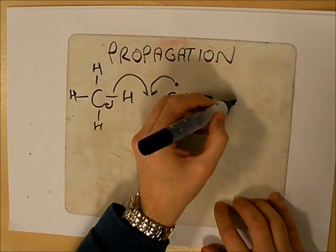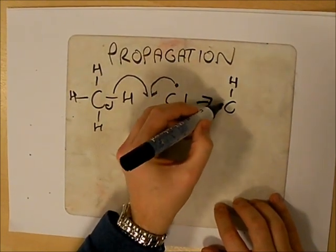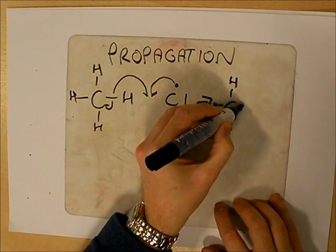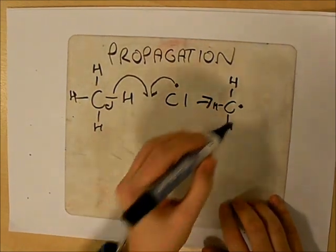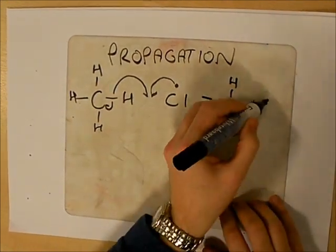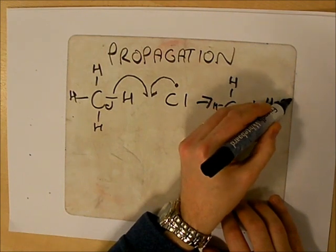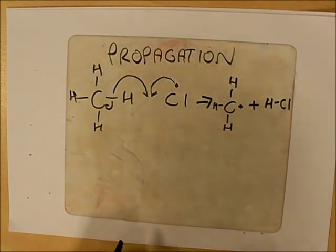This other electron then is going to return back to the carbon. This makes another free radical, which is the methyl radical, CH3 radical. And we get hydrogen chloride formed in that step.